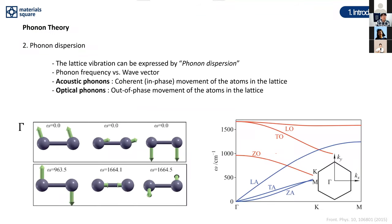Phonon dispersion is the way lattice vibrations are expressed as phonon frequency as a function of wave vector. In this figure, the x-axis shows the wave vector from Gamma to K — a high symmetry point — and the y-axis shows frequency in units of terahertz or inverse centimeters.